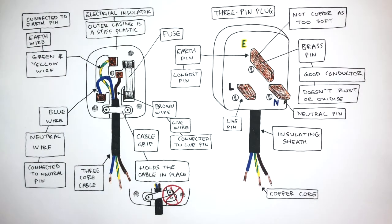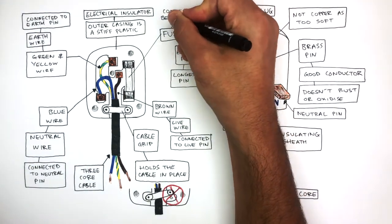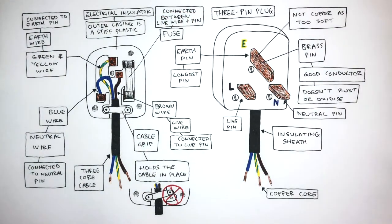The fuse is there to protect the plug. If too much current flows through the plug, this could potentially cause an electrical fire. So when the electric current is too high, the fuse melts, cuts off the electrical circuit, and switches off the appliance.